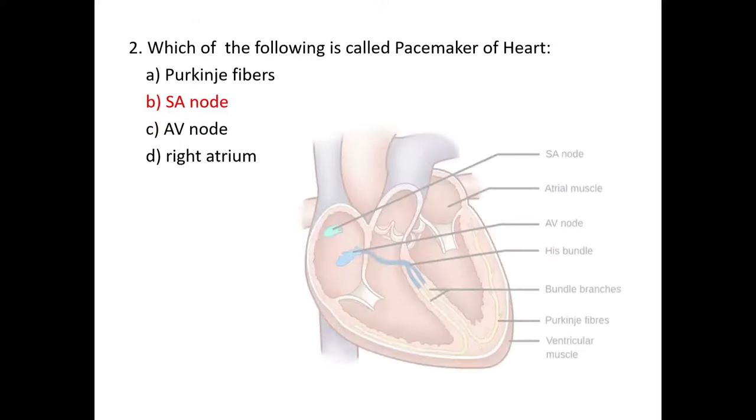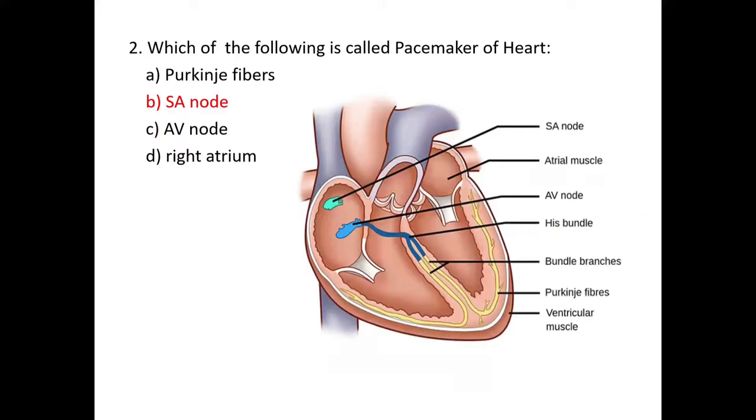Second MCQ: which of the following is called pacemaker of heart? Sinoatrial node, which is present on the right atrium and generates the electrical signal. That's why it is known as the pacemaker of heart, so B is the correct answer.